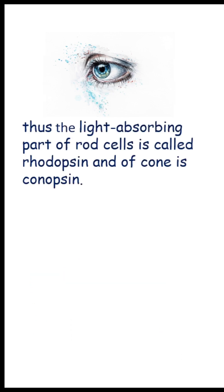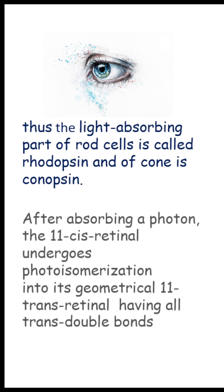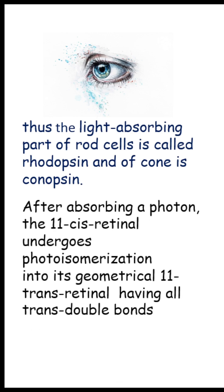The light-absorbing part of the rod cell is called rhodopsin and that of the cone is called cornopsin. In both rhodopsin and cornopsin, after the absorption of a photon, the 11-cis retinal undergoes photo-isomerization.